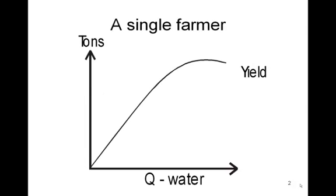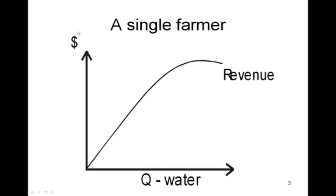So we're going to start with a very simple case. Imagine that there's some farmer who uses water. The more water the farmer uses, the more yield in terms of tons of output that the farmer achieves. However, there is a point at which the total output is maximized and any additional water actually diminishes the yield. Now in this graph we've put tons on the vertical axis, but we could easily put dollars on the vertical axis as we've done here, in which case now our curve is not total yield but total revenue.